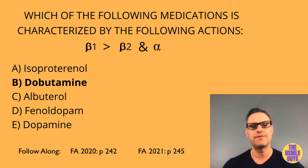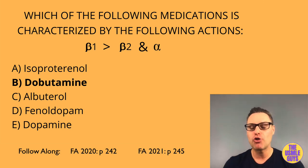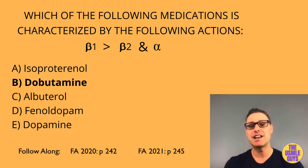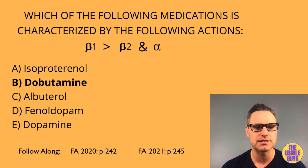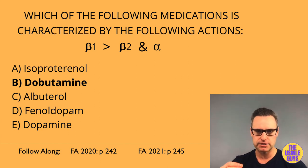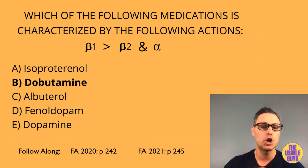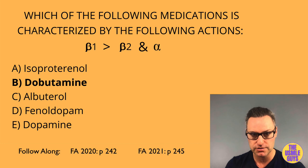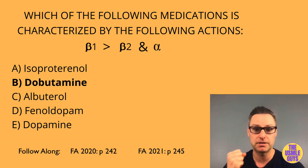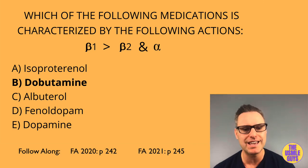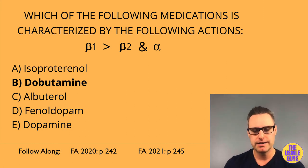Phenylephrine affects alpha-1 more than alpha-2 and can be used to manage hypotension, as a mydriasis-inducing agent in ocular procedures, for ischemic priapism, and commonly as a nasal decongestant spray. Important to note: with over-the-counter phenylephrine sprays, overuse causes a rebound effect where vessels in the nasal cavity actually dilate instead of constrict — you get momentarily clear sinuses, but then congestion worsens. This rebound effect is highly tested.